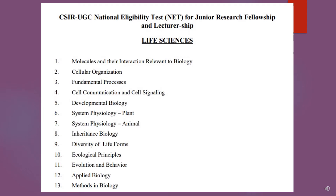CSIR Life Sciences syllabus consists of 13 units. But don't be scared — you don't need to prepare all these units. You just have to choose 7 to 8 units among these and prepare them very well.